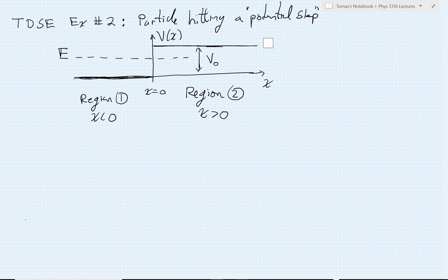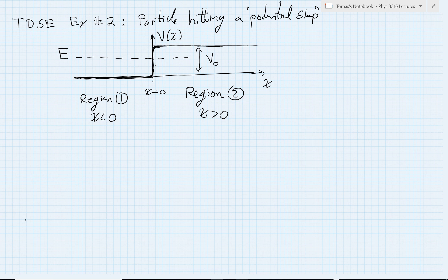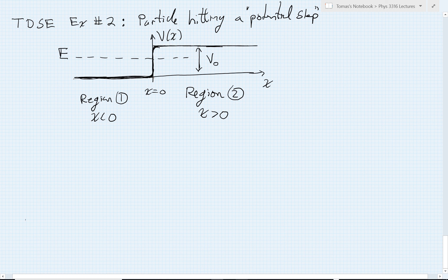When I draw a potential like this, I'm really talking about a continuous function — it comes up very steeply. When I draw it as a discontinuous function, what I'm really saying is that the distance over which this is smoothed over is smaller than any of the relevant length scales in the problem. In a few lectures, we're going to run into an apparent paradox whose resolution will involve violating this condition — a little teaser for future lectures.